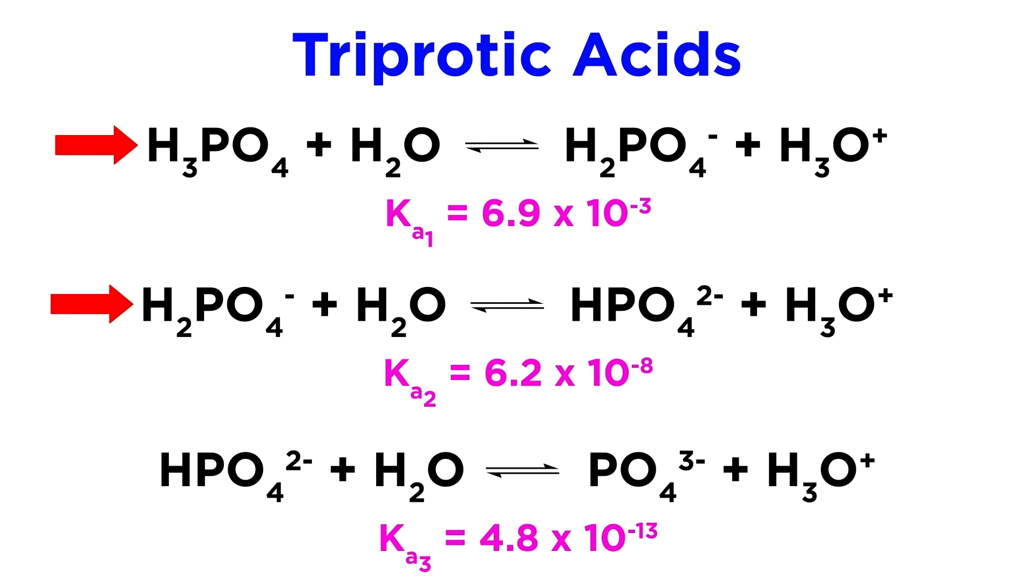Here are the three relevant equilibria and their associated Ka values. As we can see, the first proton is much more acidic than the second, by five orders of magnitude, and the second is another five orders of magnitude more acidic than the third.